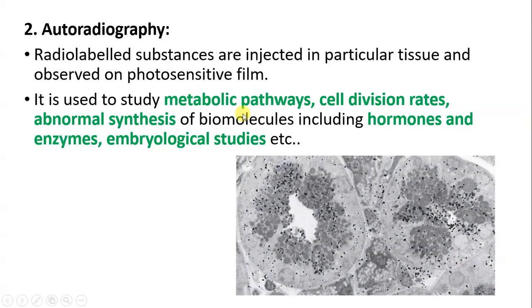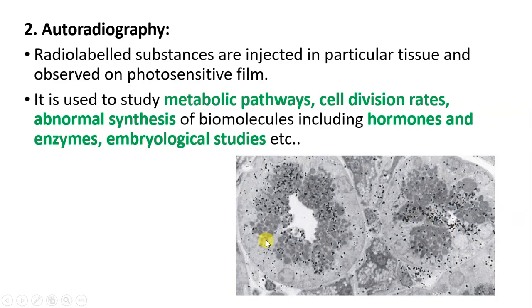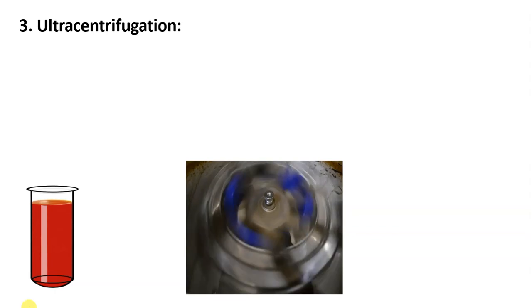In auto-radiography, radio-labeled substances are used and injected into cells and tissues so that we can observe metabolic pathways, cell division, synthesis of biomolecules, production of hormones and enzymes, and embryological studies. By using radio-labeled substances, we are able to study all these things inside our cells — this technique is called auto-radiography.